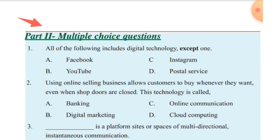Part 2 is multiple choice. Which of the following includes digital technology except one? The options are: Facebook, YouTube, Instagram, and the postal service. The postal service is not a digital technology, so the answer is the postal service.